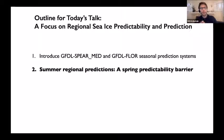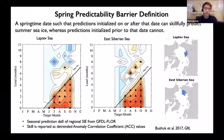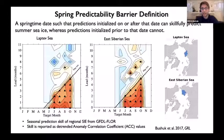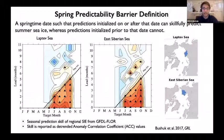I'll now focus on the so-called spring predictability barrier. I define this as a springtime date such that predictions initialized on or after that date can skillfully predict summer sea ice, whereas predictions initialized prior to that date cannot.